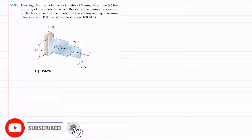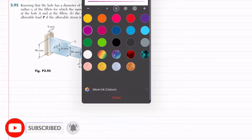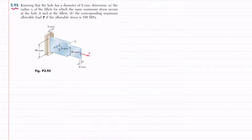Welcome back. Problem 2.95. In this problem it is given that knowing the hole has a diameter of 9 millimeters, determine the radius rf of the fillet for which the same maximum stress occurs at hole A and at the fillet, and the corresponding maximum allowable load P if the allowable stress is 100 megapascal. This figure is completely different from the previous example — there is a small hole A and a fillet rf, and load P is applied.